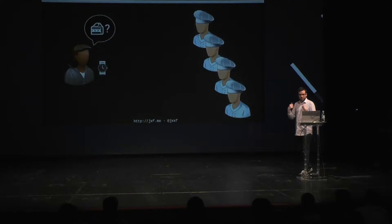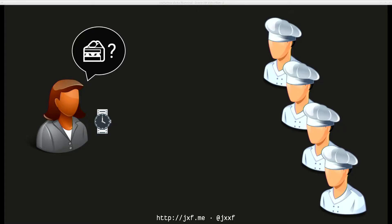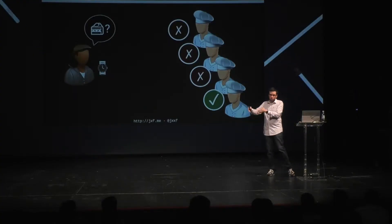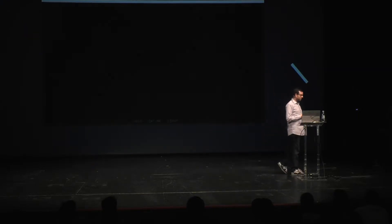An economist calls this a double coincidence of wants — it's just a coincidence without money that you have something another person wants. Alice might have a watch, but that doesn't mean the person who has what she wants also wants a watch. So if you want a piece of cake, it might be that there are a lot of bakers, but maybe only one or two of them actually want a watch. That's a lot of work.